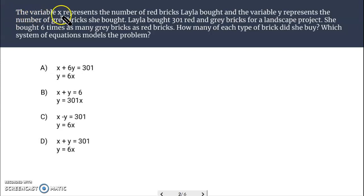Let's look at the first one here. It says, variable x represents the number of red bricks Layla bought, and the variable y represents the number of gray bricks she bought. Layla bought 301 red and gray bricks for a landscape project. She bought six times as many gray bricks as red bricks. How many of each type of brick did she buy? Which system of equations models the problem?